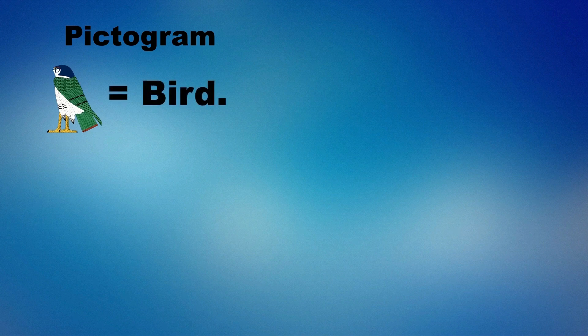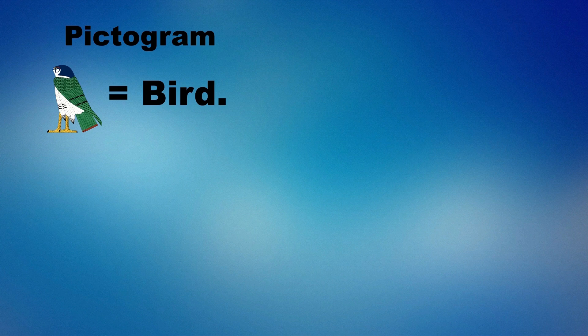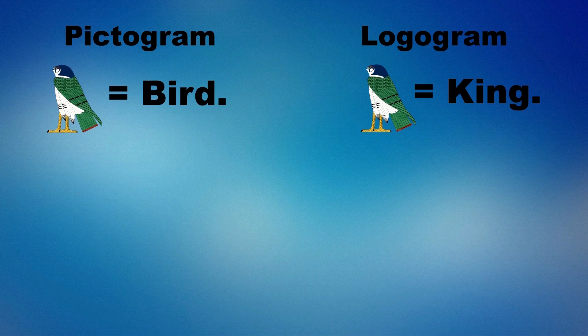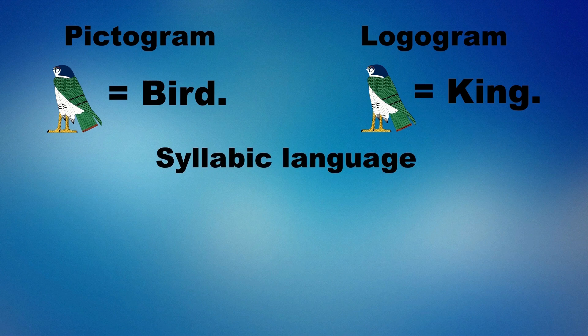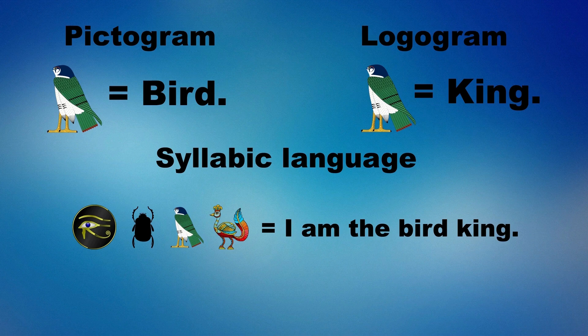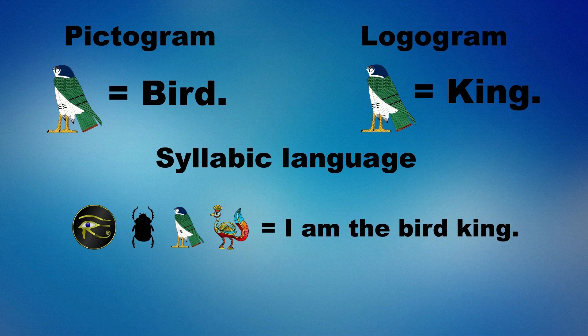The first written language in the ancient world were pictographs, in which the written sign stood for the object itself. In around 3000 BC, a system of logograms was developed in which signs were created for important words, the most popular example being Egyptian hieroglyphs. A fully syllabic language in which signs were used solely for their phonetic value was fully developed in around 1500 BC.